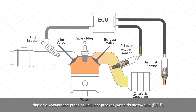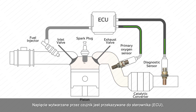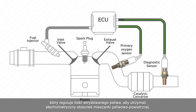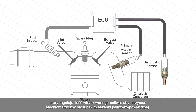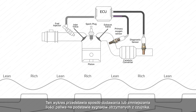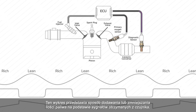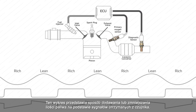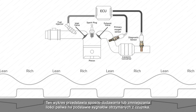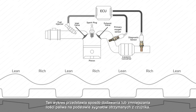The voltage produced by the sensor passes to the ECU, which adjusts the injected fuel quantity to try and maintain a stoichiometric air-fuel ratio. This graph shows how fuel quantities are added or reduced based on the signals received from the sensor.